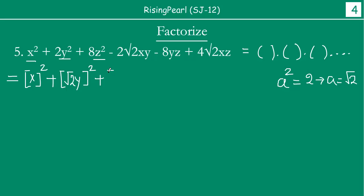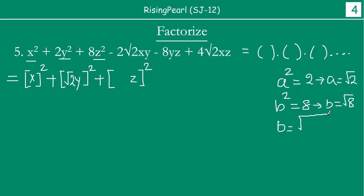Similarly, you have 8z². We want to write this as (b·z)², so b² = 8, which means b = √8. Now √8 = √(4×2) = √4 × √2 = 2√2. So 8z² can be written as (2√2·z) whole square, because (2√2·z)² = 8z².